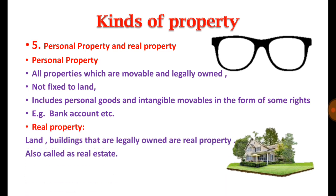Real property, also known as real estate, refers to properties which are immovable in nature, such as land and buildings, that can be legally owned. We commonly refer to landed properties and house properties as real estates, so these are also called real properties. The nature of such property is immovable. Properties are classified on the basis of their nature — tangibility, corporeality, etc.